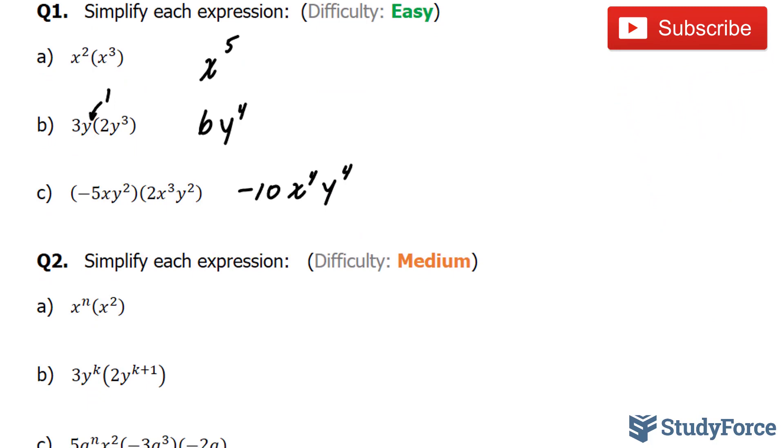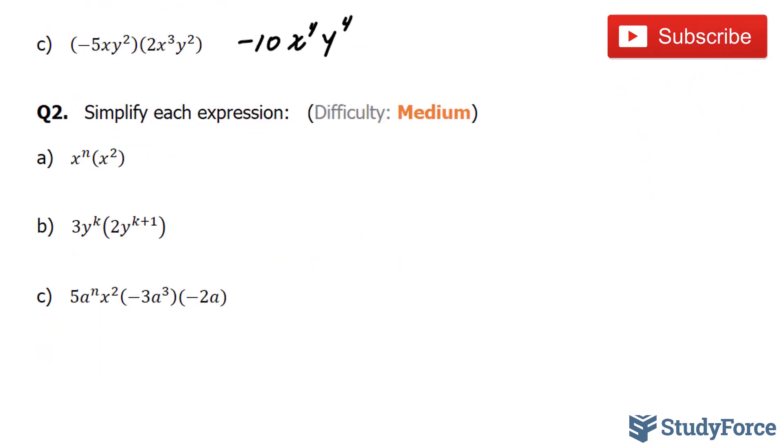And in question number 2, we have more of the same except these are a little more difficult. In part A, we have x to the power of n times x to the power of 2. The bases are the same, so we add the exponents. But because 2 and n are not like terms, we write it out as x to the power of 2 plus n.